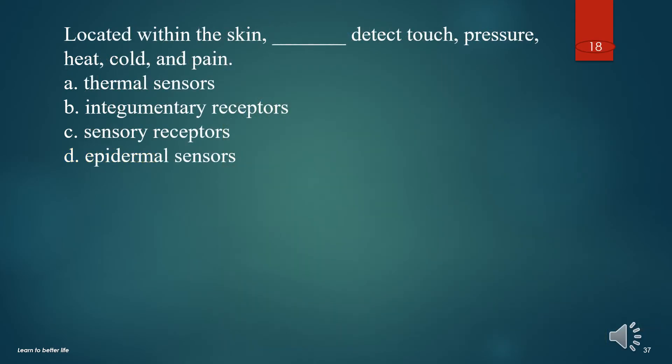Located within the skin, what detect touch, pressure, heat, cold, and pain? A. Thermal sensors. B. Integumentary receptors. C. Sensory receptors. D. Epidermal sensors. The answer is C. Sensory receptors.